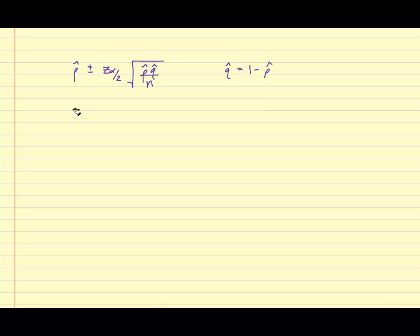For this example, we have to determine p hat, and that's equal to x over n. In a sample of 1,650 freshman students, 1,221 of them continued on the next year. So 1,221 is x and 1650 is n, and that equals 0.74. We're going to plug this number into the formula as well as the other information and simplify.